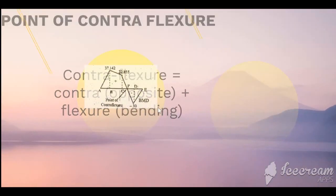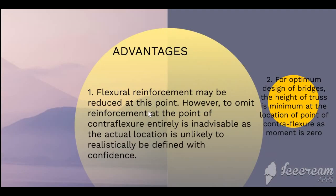The benefit of the Point of Contra Flexure is that flexural reinforcement may be reduced at this point. Since the bending moment is zero or near zero, you don't require full bending reinforcement. However, you cannot omit reinforcement entirely, because the location of the point of contra flexure may vary and you must provide minimum reinforcement as per codal provisions. In an RCC beam, the reinforcement can be optimized — but not omitted — at that point.